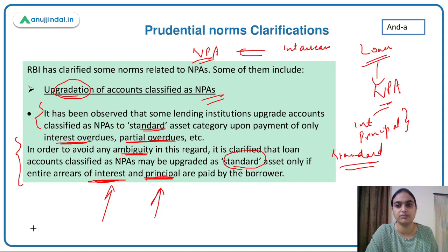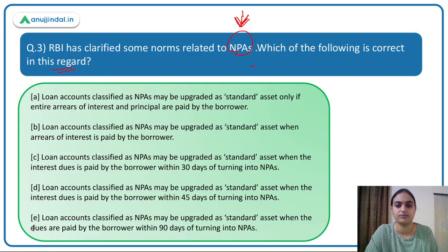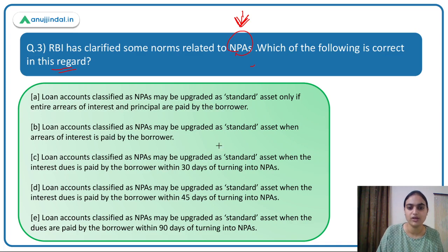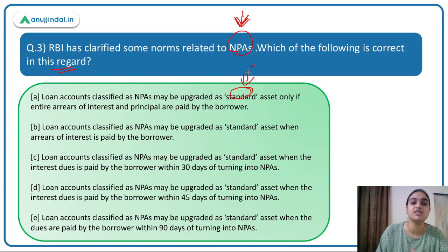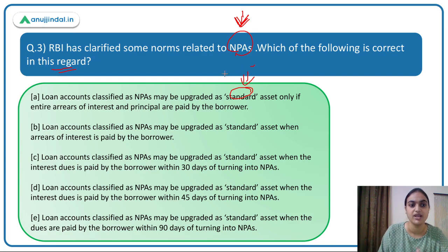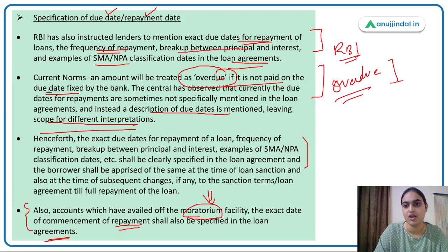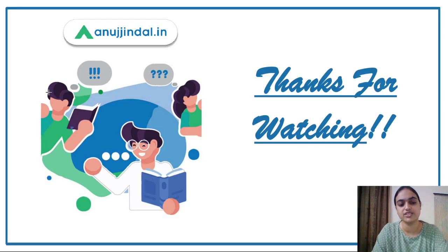Coming back to the last question, we need to identify the correct rule clarified by RBI regarding standard assets. The norm clarified is that NPAs will be classified back as standard assets only when the entire interest and principal is repaid by the borrower. The first option states exactly this, so the answer is option A. That was all about today's session — thank you so much.